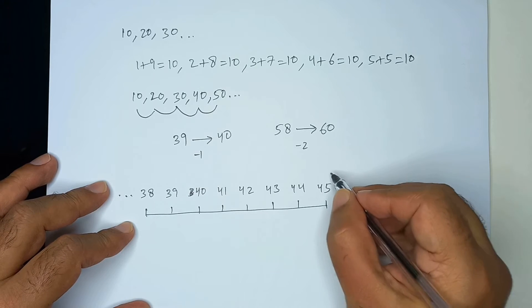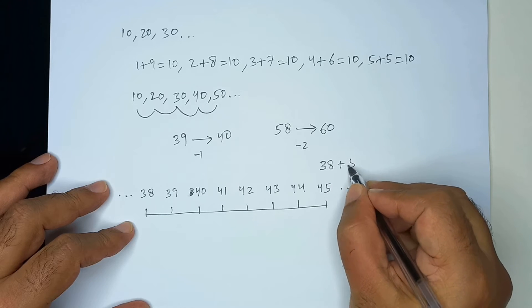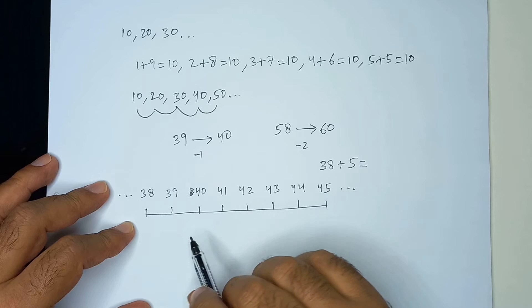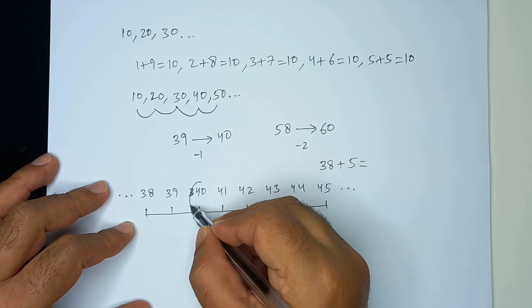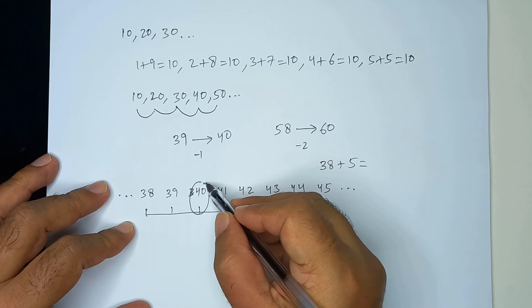If I want to do 38 plus 5, let's say, now we know that 38 is close to 40, right? And is 2 below it.